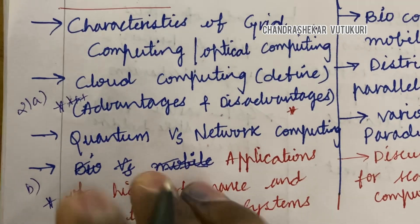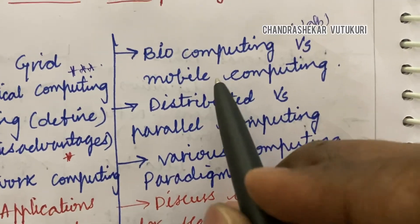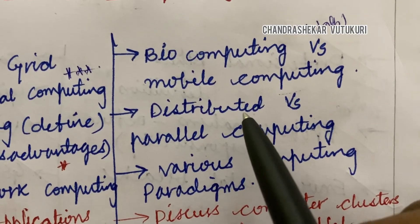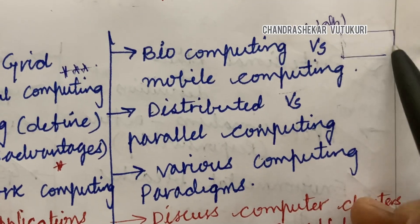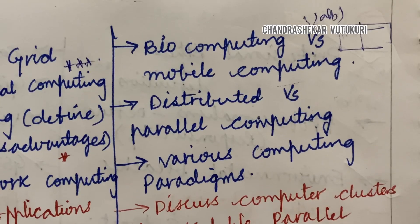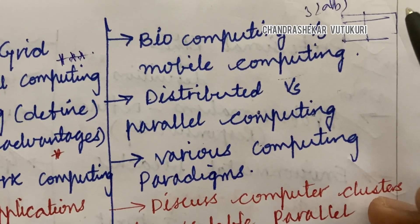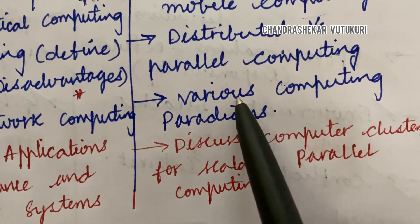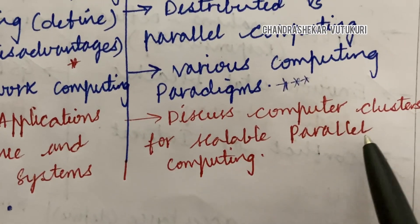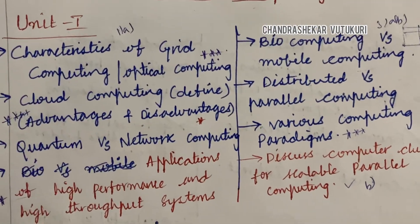If you work out these topics, you would be able to work out even Unit 1A. For 3A and 3B, it's all about Bio Computing vs. Mobile Computing, and Distributed vs. Parallel Computing — you are going to get differences between various types of computing. You are supposed to make a tabular column to get good marks. Various computing paradigms is also a gunshot question. Discuss computer clusters for scalable parallel computing is also a Part B question. These are the questions from Unit 1.